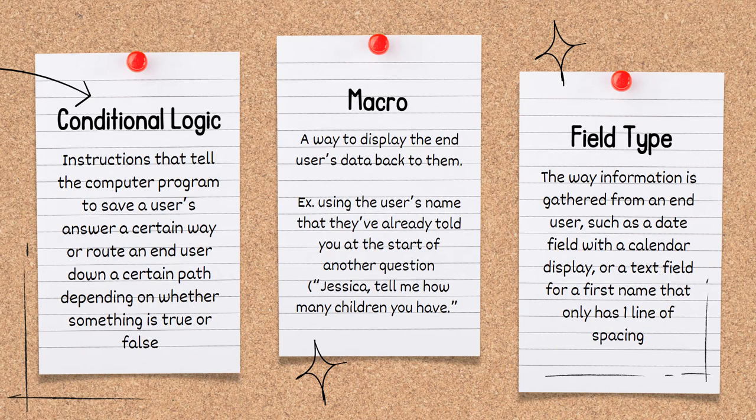Conditional logic is instructions that tell the computer program to save a user's answer a certain way or route an end user down a certain path, depending on whether something is true or false.